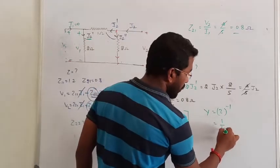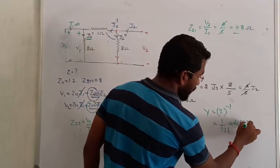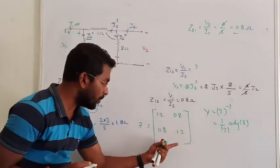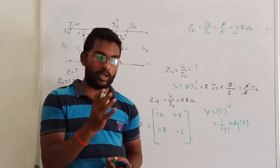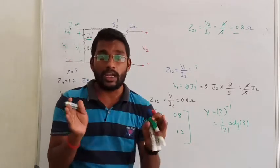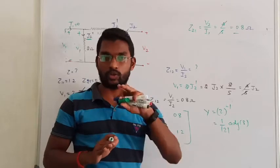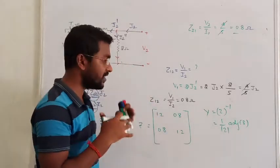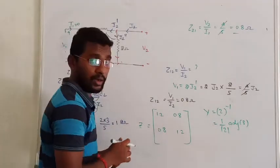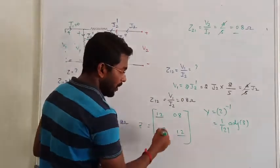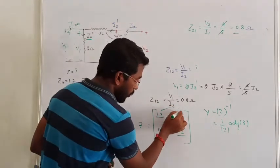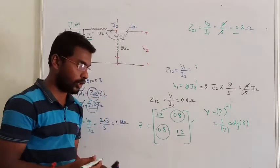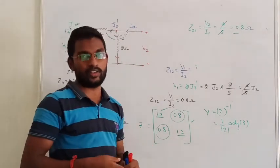If you want Z inverse, what we know is 1 by mod Z into adjoint of Z. If we have impedance parameters and you need admittance parameters, inverse hybrid parameters and hybrid parameters interconnection. This is symmetric, Z12 equal to Z21, that is reciprocal. So this is symmetric and reciprocal. If you have doubts, you can ask in the comment section.